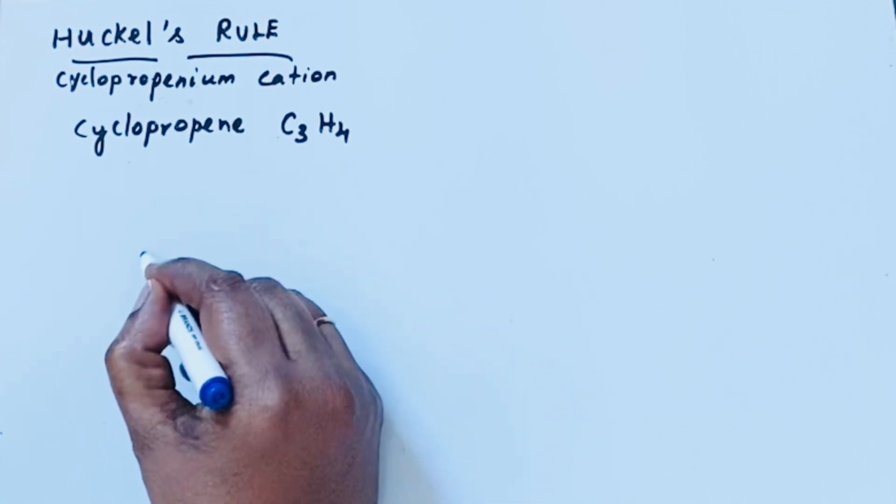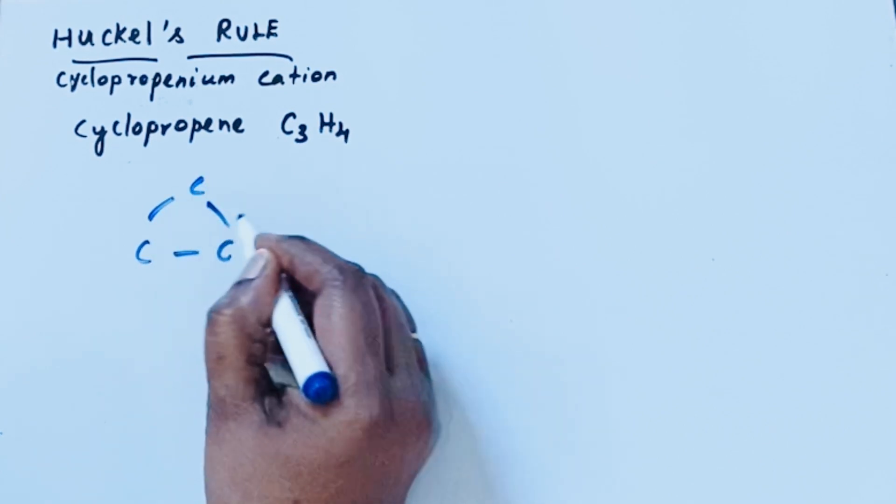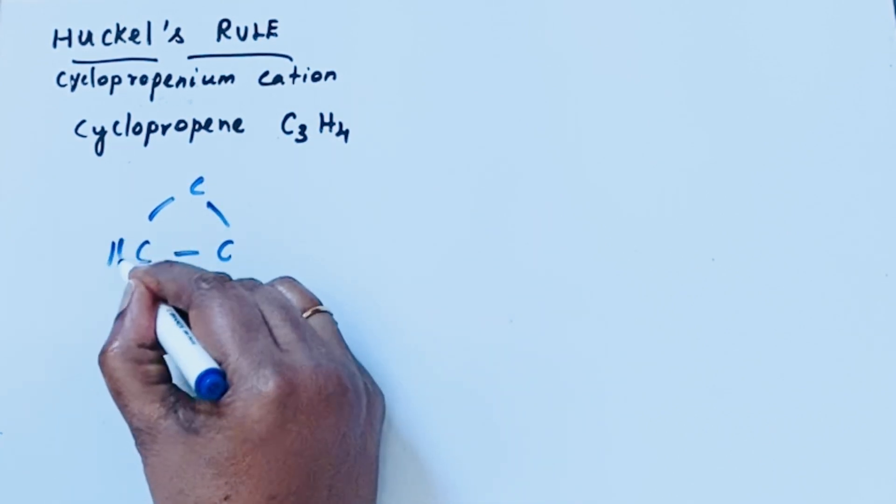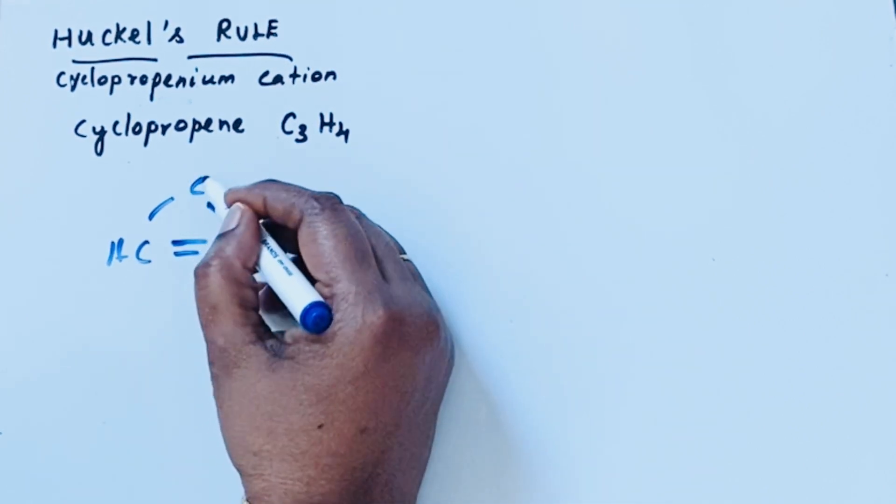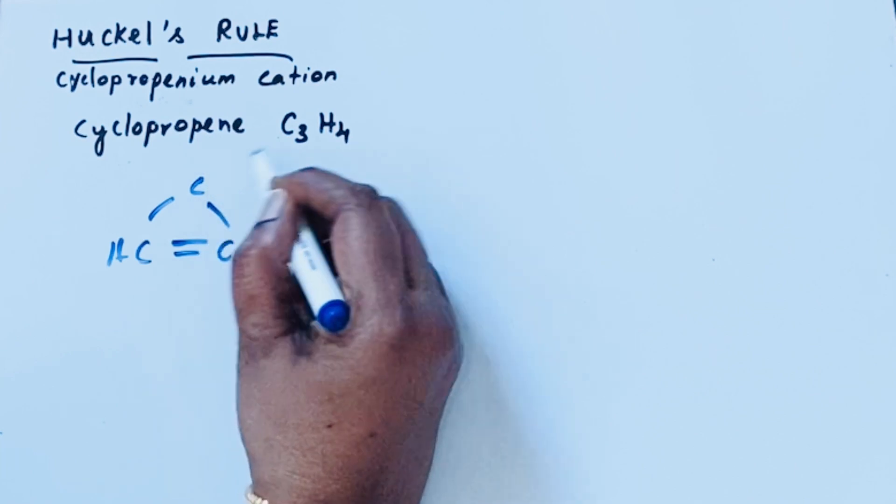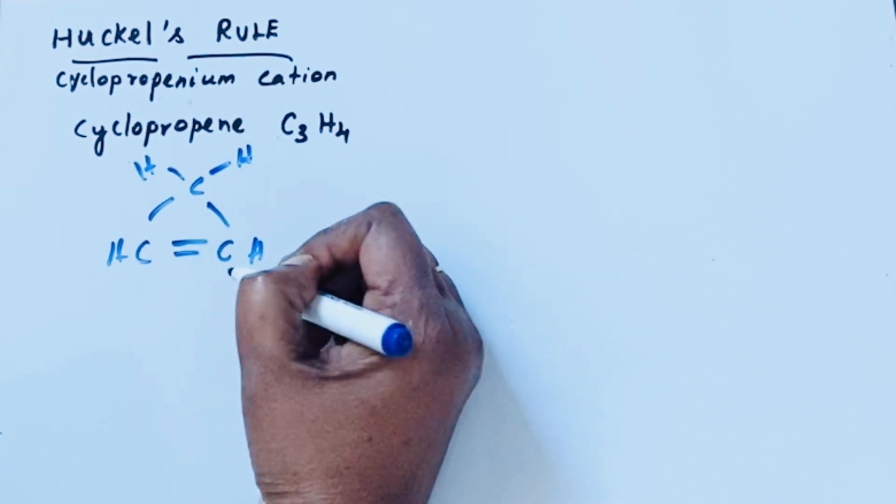First, let us draw. There are three carbons in a chain, then hydrogen. That is a double bond, then after that two hydrogen atoms. So this is cyclopropene.